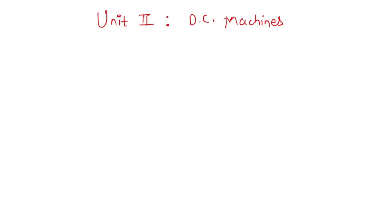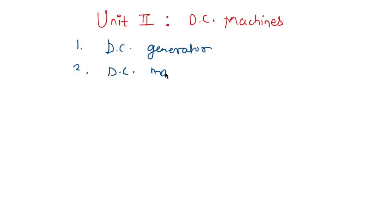DC machines have 2 types. The first one is DC generator and the second one is DC motor. So first we will see DC generator types, because if there is a machine, there is a generator or a motor. So first we will see the generator types.